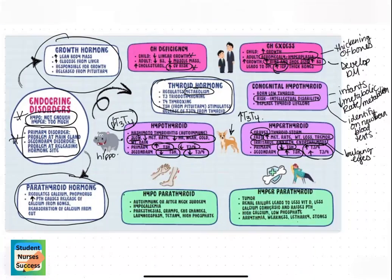Now we need to move on to parathyroid hormone. The parathyroid glands are located on the thyroid and they regulate calcium and phosphorus. An increase in parathyroid hormone causes an increase in calcium by causing the bones to release calcium, causing the gut to reabsorb more calcium from foods, and acting on the kidneys by decreasing calcium lost in the urine. As calcium levels rise, phosphate levels decrease, and vice versa.